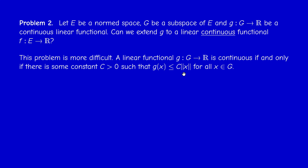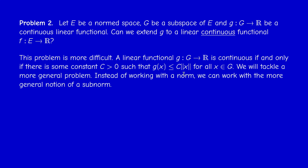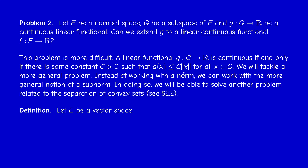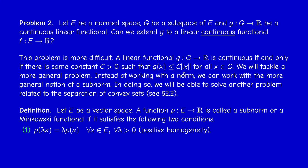By working with a sub-norm or Minkowski functional, we will be able to tackle another problem of geometric nature — this will be the second form of the Hahn-Banach theorem. If we have a vector space E and a function P from E to R, not linear in general, we say P is a sub-norm or Minkowski functional if it satisfies two properties: first, P(λx) = λP(x) for every λ > 0 and x in E — this is positive homogeneity — and second, the triangle inequality, also called sub-linearity.